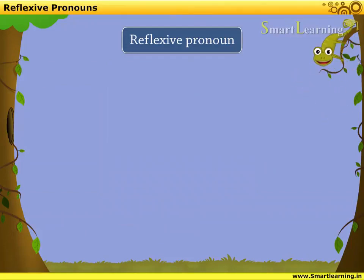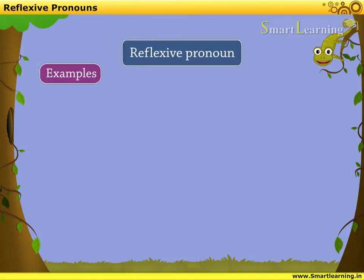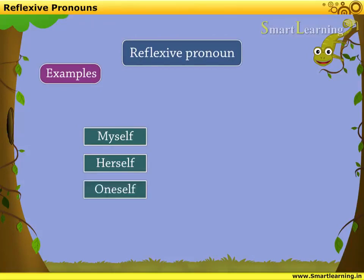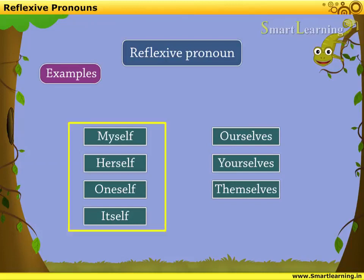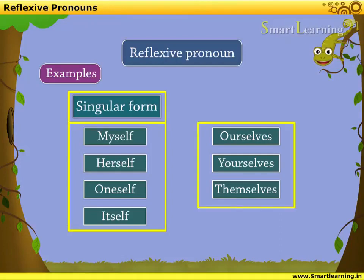Some more examples of reflexive pronouns are: Myself, Herself, Oneself, Itself, Ourselves, Yourselves, Themselves, etc. Among all these reflexive pronouns, the words ending in 'self' are in singular form, while the words ending in 'selves' are in plural form.